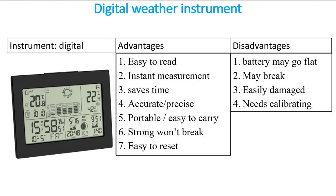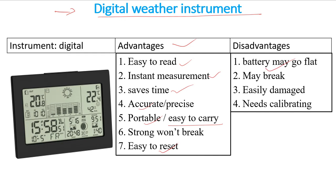Finally, we're looking at digital weather instruments. The advantages include: they are easy to read, give instant measurements, save time, are accurate, portable and easy to carry, strong, and easy to reset. The disadvantages include: the battery can easily go flat, the instrument may break despite being strong, it can be damaged easily, and it needs setting and calibrating before you can take readings. These are the advantages and disadvantages of using a digital instrument over an analog one.